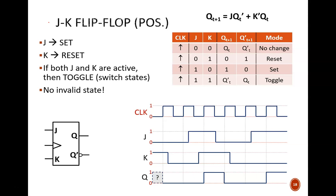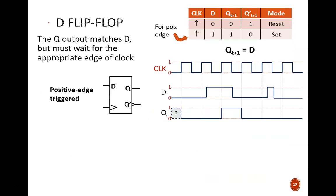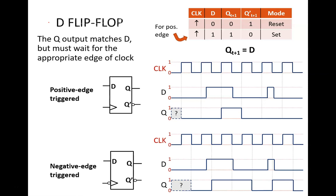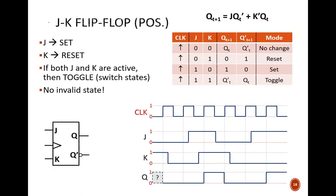Flip-flops can only change state on the appropriate edge of the clock waveform, either the positive edge or the negative edge. That is where we ended last video with our discussion of D flip-flops. That fact will not change in this lesson, as we study two other types of flip-flops: JK and T.